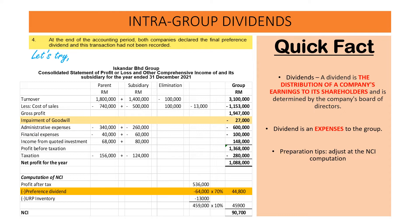So for the adjustment, we have to adjust the preference dividend in the computation of the NCI. Here you can see the computation of the NCI, whereby we have the profit after tax of the subsidiary 536,000, and then we have to minus the preference dividend of 64,000, minus the adjustment for the unrealized profit of 13,000.